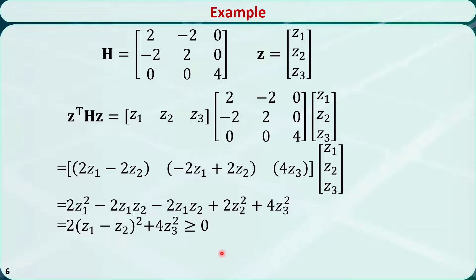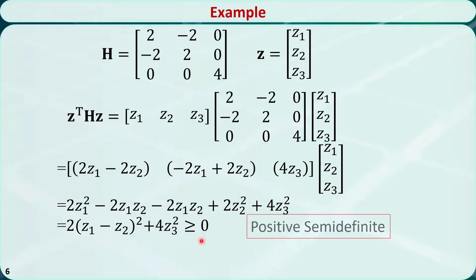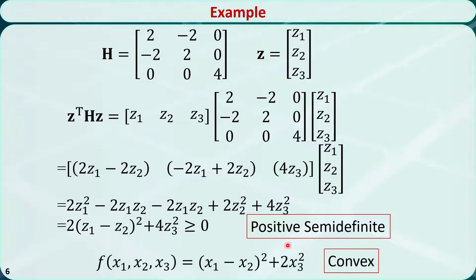We find that this term must be greater than or equal to 0, and so must this term. Therefore the sum should also be greater than or equal to 0. This Hessian matrix is positive semi-definite based on the definition. Finally, we can conclude that this function is a convex function.